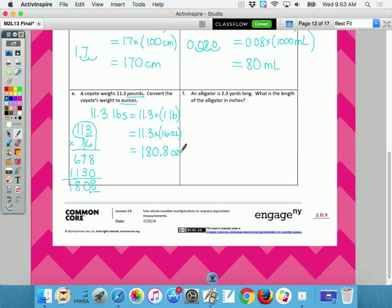Let's look it up. An alligator is 2.3 yards long. What is the length of the alligator in inches? Now, do you remember the other day when I had to put this meter stick out there and then I added some rulers to figure out how many feet were in a meter and it was three feet in one yard? So if I've got three feet, how many inches is that? Thirty-six. Very good.